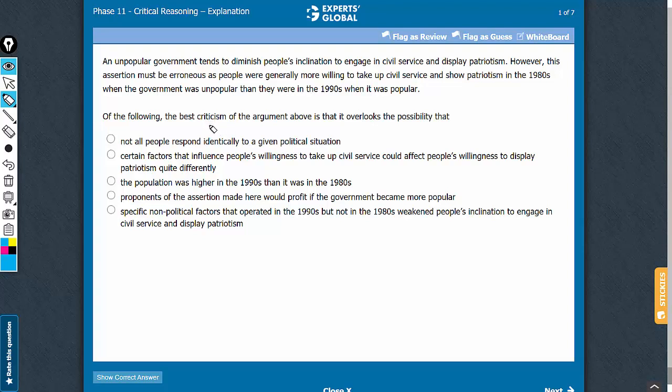Indirectly, this is an explanation question. We are supposed to provide criticism for the argument. We need to suggest that calling this assertion erroneous is not correct, and how we can do this is by suggesting some explanation for the event mentioned here.